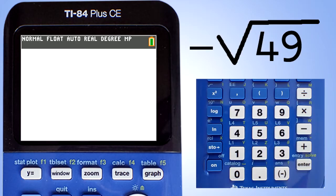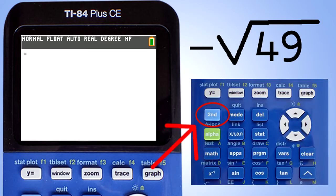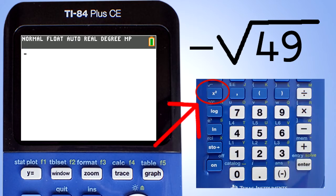The first radical is the negative square root of 49. Press the negative sign here. Do not press the minus sign. Next press the second key. Next press the x squared key. The square root symbol appears with a dotted box under the square root. Enter the 49.